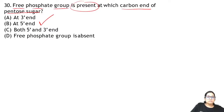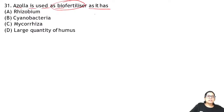Question 31: Azolla is used as a bio-fertilizer because it has — the answer is B — because it contains cyanobacteria which fixes nitrogen.